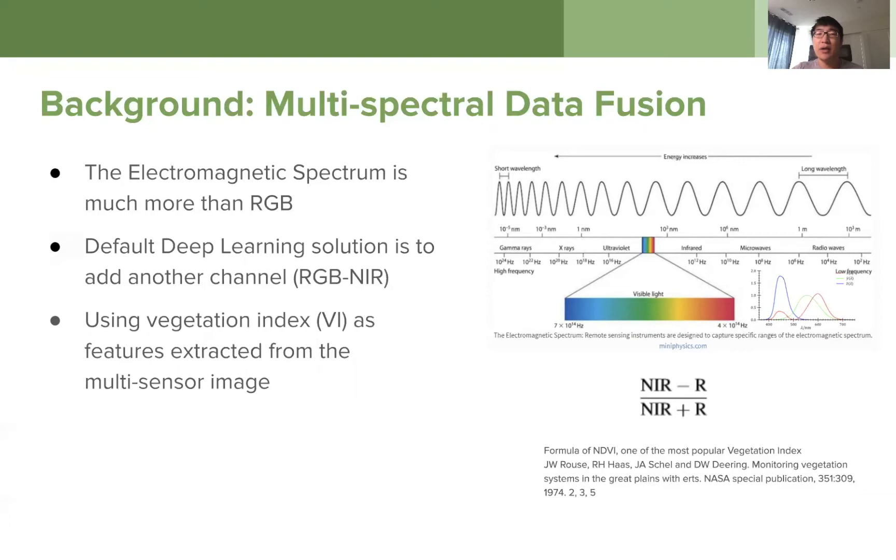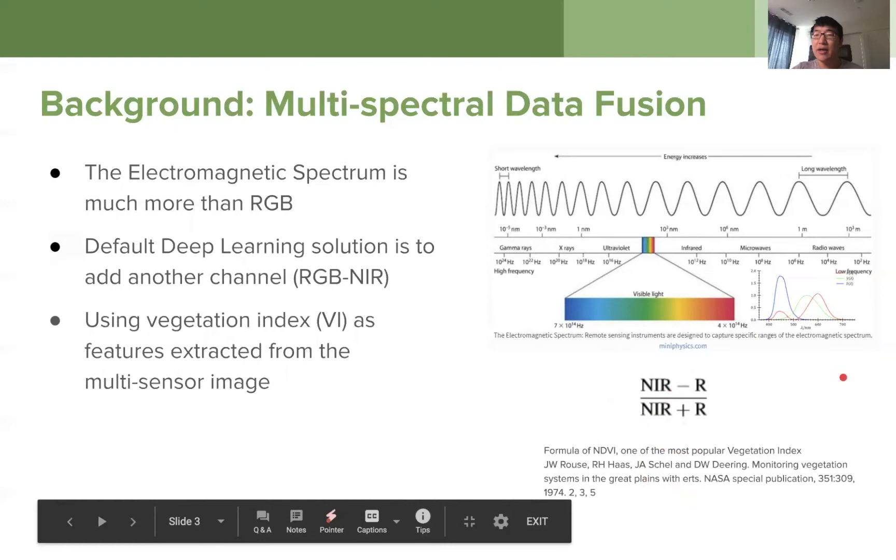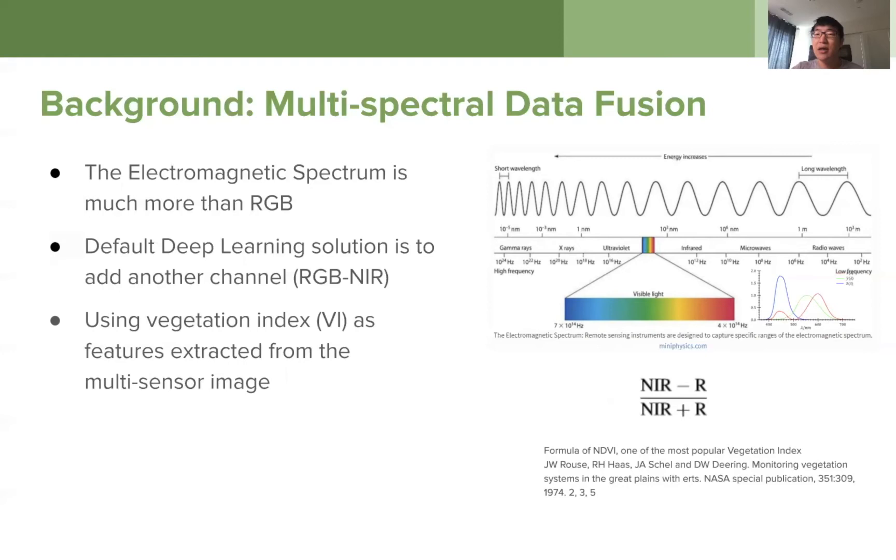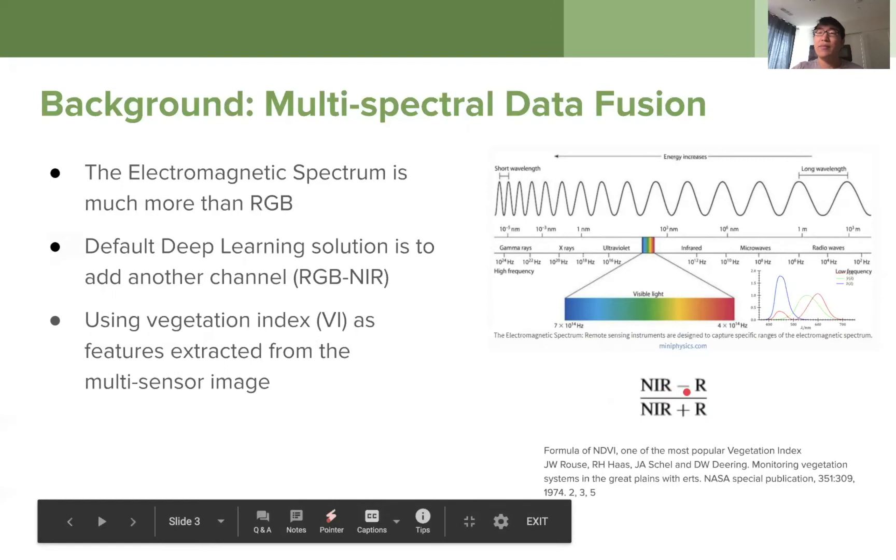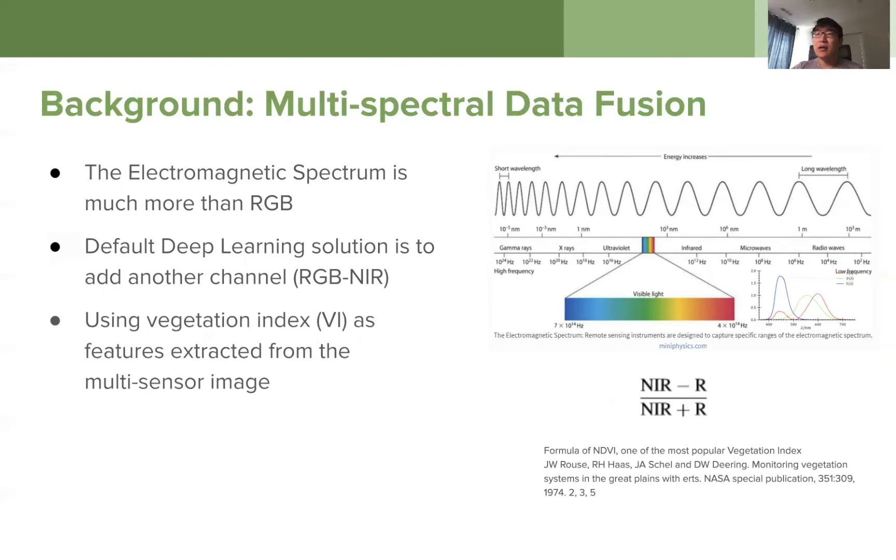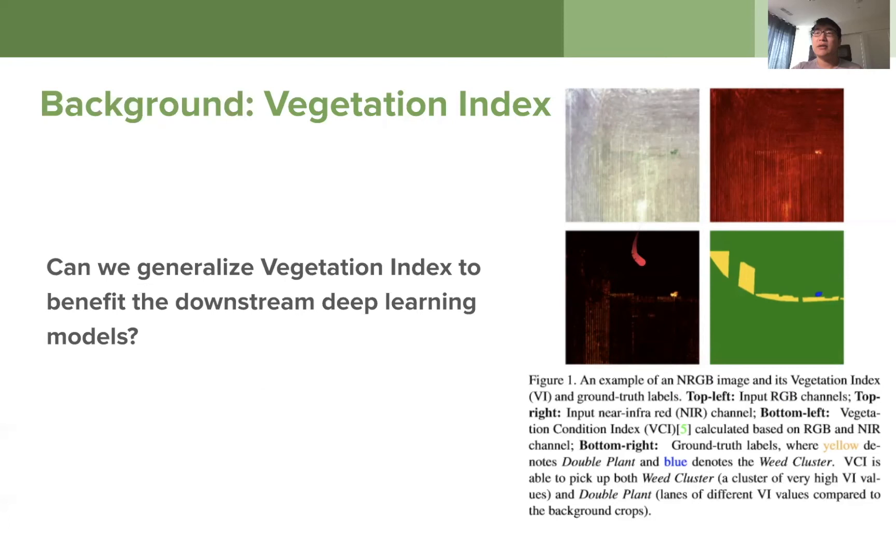This is not actually what the literature suggests us to do. So when we search the literature, especially the remote sensing literature before deep learning, people use vegetation index a lot as a feature extracted from the multi-sensor image to detect the vegetation, the diversity of the vegetation. So here is one example. This is the formula of NDVI, one of the most popular vegetation index proposed in the 1970s. Here we normalize the near-infrared versus the red channel because the reflection of vegetations are largely pretty sensitive in near-infrared than red.